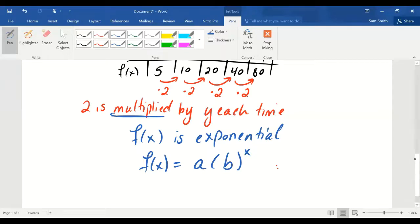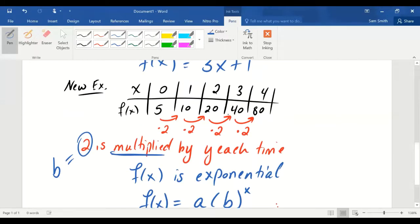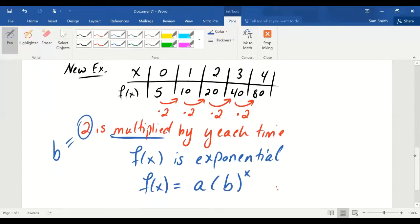Not only that, this number 2, that's being multiplied each time, is exactly the value of the base. The base 2 is getting multiplied each time. Now, what do you think is the value of a for this table? The value of a for this table, just as in the linear case, is the initial amount.